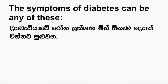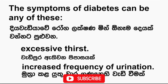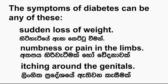The symptoms of diabetes can be any of these: increased frequency of urination, sudden loss of weight, numbness or pain in the limbs, or itching around the genitals.